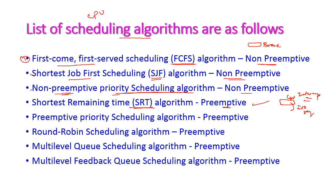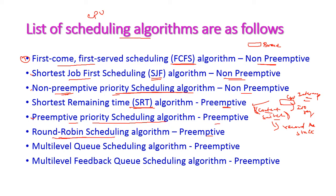This is preemptive scheduling. In preemptive scheduling, there should be a context switch. Context switch is used to record the state of the currently executing process before exiting from the CPU. Next is preemptive priority scheduling algorithm.